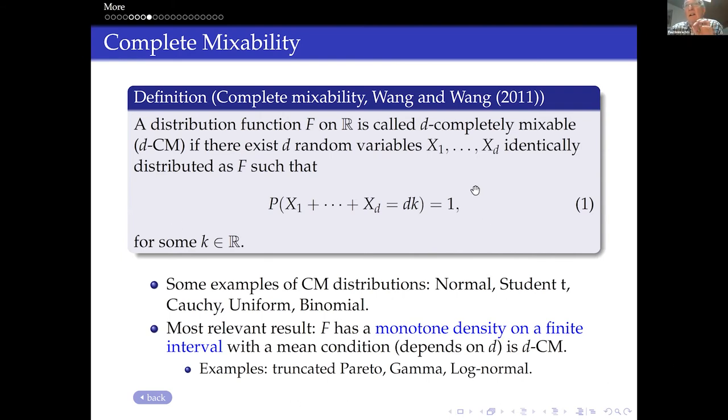This is the definition. A distribution function F is called D completely mixable if there exists D random variables, all with the same distribution, such that their sum is degenerate. And whatever the constant you can calculate depends whether you have a mean or not. So if the one goes up, then you don't have to concentrate by going down. So you see the negative dependence entering, creeping into this definition. For instance, the normal distribution is D completely mixable for every D. There are many more examples. So there's a whole theory. Now, I claim you will see more and more fundamental applications also in economics and finance from this particular concept.